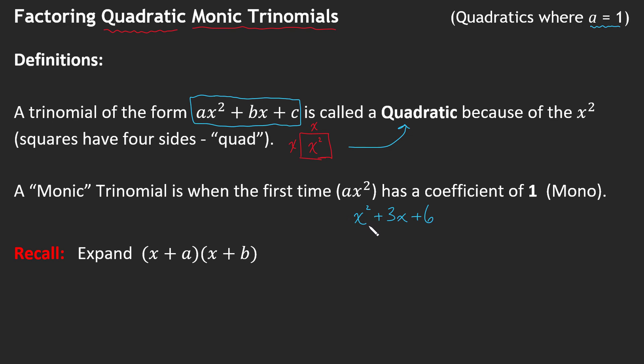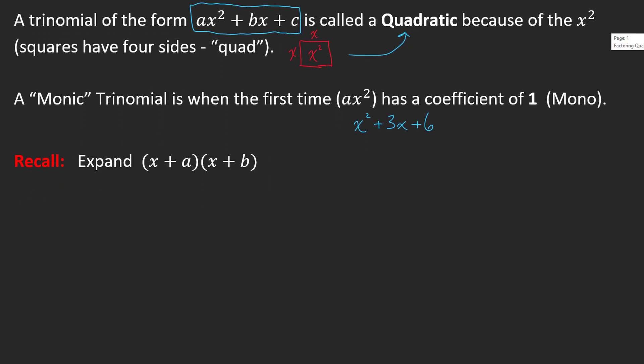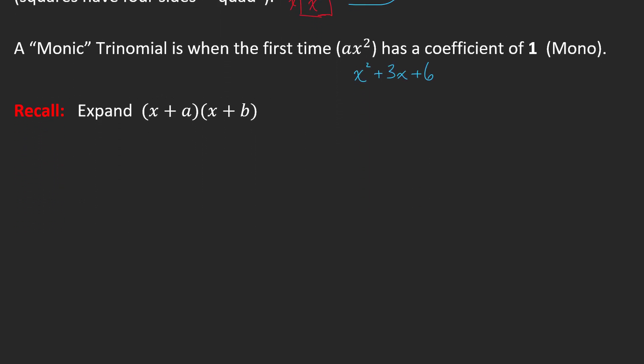So hopefully these definitions stick and they make sense. So we're going to really quickly just practice our expansion here. And we have a binomial with (x + a) and another binomial with (x + b) and we're going to see what we get when we multiply that out.